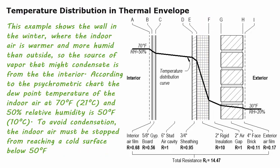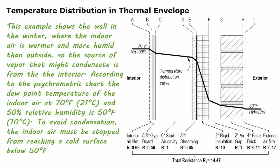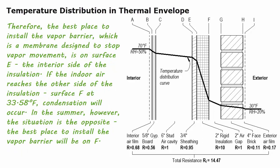This example shows the wall in the winter, where the indoor air is warmer and more humid than outside, so the source of vapor that might condense is from the interior. According to the psychrometric chart, the dew point temperature of indoor air at 70°F and 50% relative humidity is 50°F. To avoid condensation, the indoor air must be stopped from reaching a cold surface below 50°F. Therefore, the best place to install the vapor barrier — a membrane designed to stop vapor movement — is on surface E, the interior side of the insulation. If the indoor air reaches surface F at 33.58°F, condensation will occur.